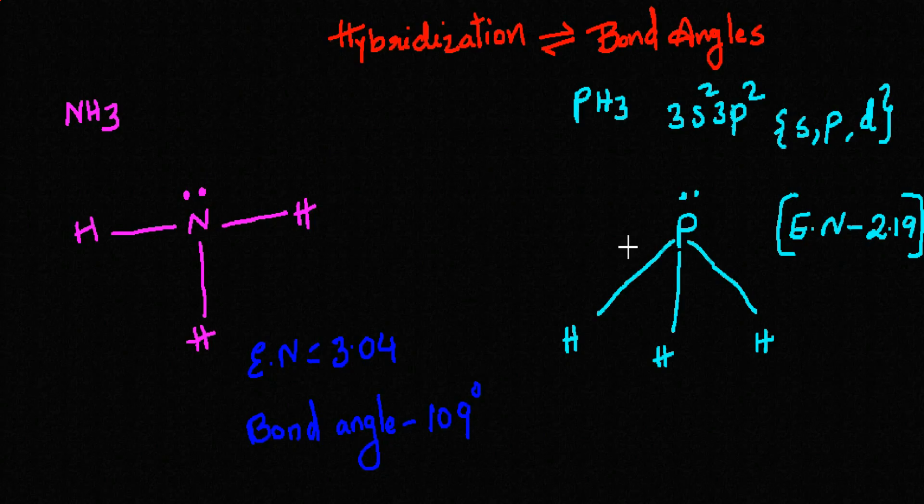The Lewis dot structure of the PH3 molecule contains one lone pair and three bond pairs with hydrogen. Because of the larger size of phosphorus, the repulsion forces between bond pair electrons and lone pair electrons are minimal compared to NH3. Therefore, these repulsion forces have minimal effect on the molecular geometry. The three hydrogens occupy the three unpaired electrons in 3px, 3py, and 3pz, while 3s2 does not involve in any repulsion or bonding. Therefore it is stable from the beginning, and since not all orbitals are involved in bonding, PH3 is not hybridized.